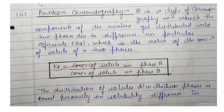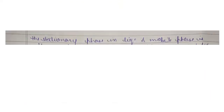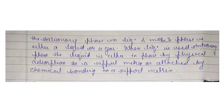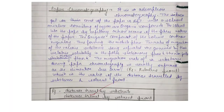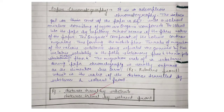Now we will see paper chromatography. You can understand paper chromatography from a small formula: Rf equals the distance traveled by the substrate divided by the distance traveled by the solvent front.